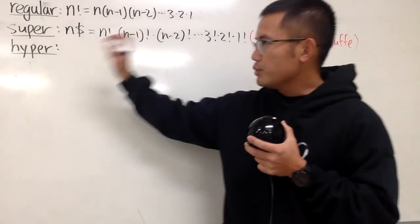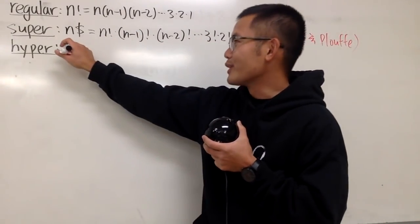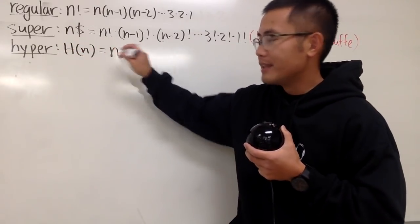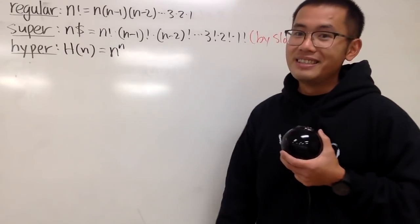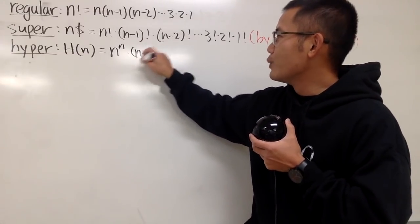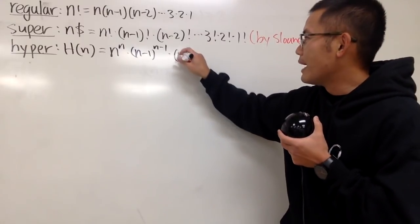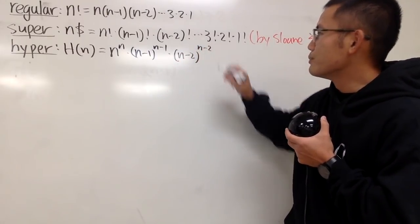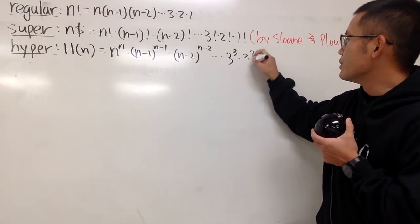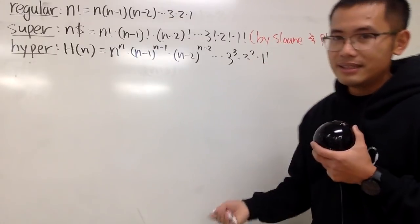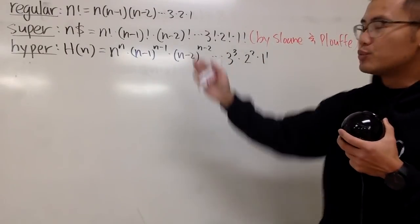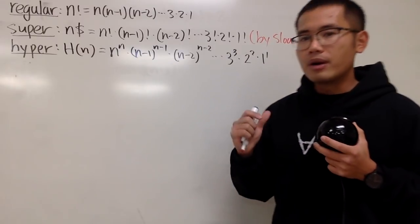For the hyperfactorial, we only have one definition, and the notation is h of n. What we do is we start with n raised to the nth power, then multiply by n minus 1 raised to the n minus 1 power, then n minus 2 raised to the n minus 2 power, and so on: 3 to the 3rd, 2 to the 2nd, 1 to the 1st. All of this is for positive whole number n.